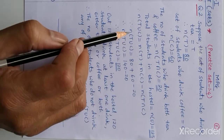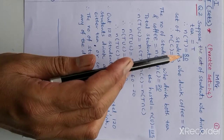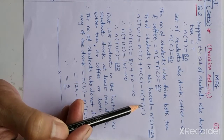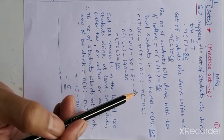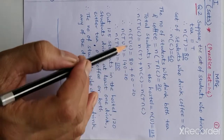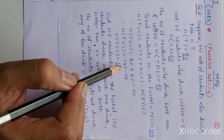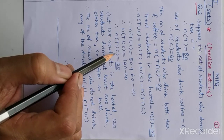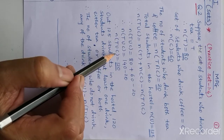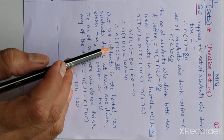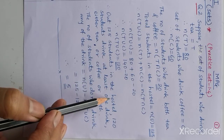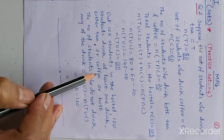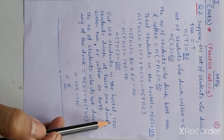Using the formula n(T∪C) = n(T) + n(C) − n(T∩C), putting the values: n(T∪C) = 80 + 60 − 20 = 120. So 120 students in the hostel drink at least one drink, either tea or coffee or both.